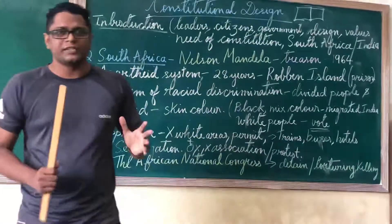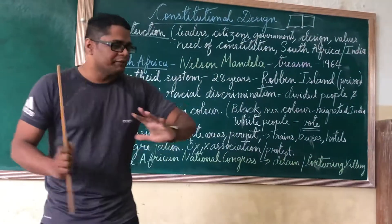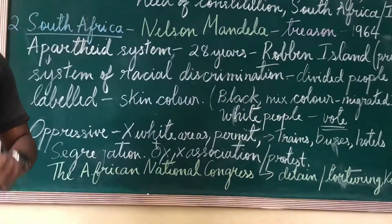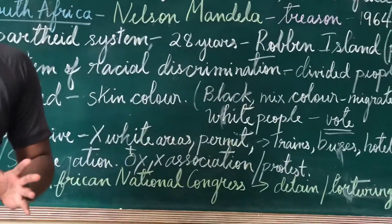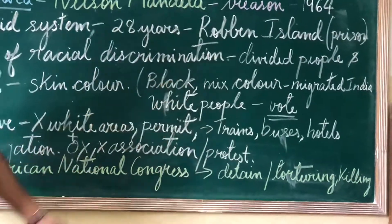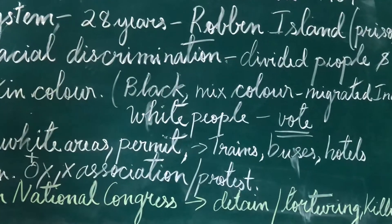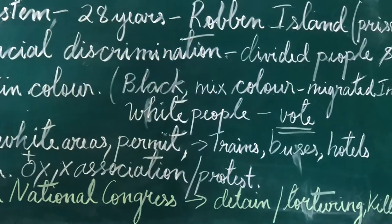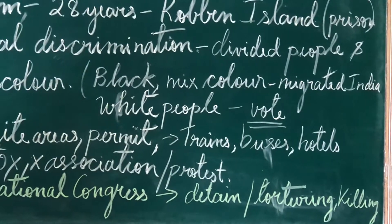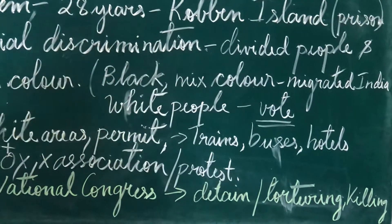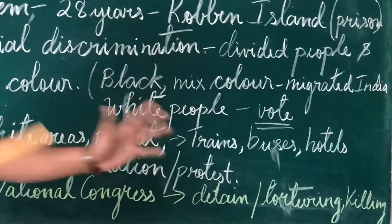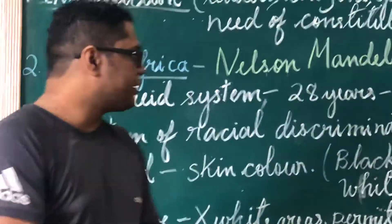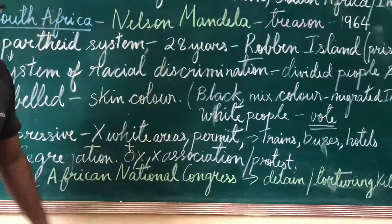The white people — the foreigners, the politicians — were kept separate. Then there were the black people, who are mostly native South Africans. Then there were the mixed-color people, mostly Indians who had migrated from India. So there were sections: black people, white people, and mixed-color people.